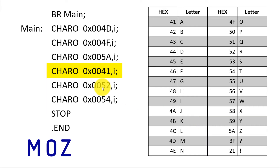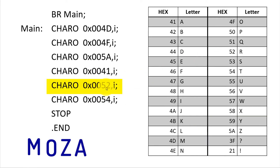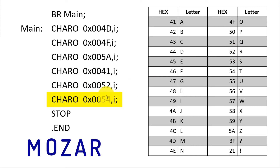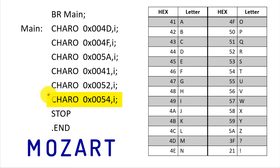The next instruction outputs 'a'. The next character is 52, which is 'r', and 54, which is 't'. So our output word is Mozart.